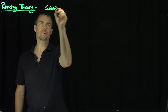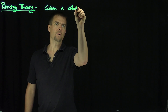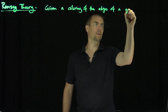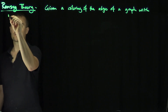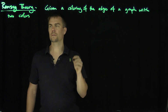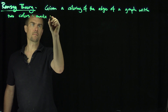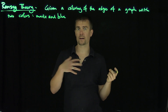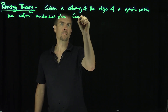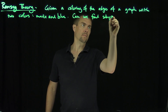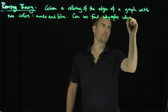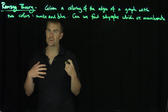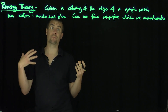Ramsey theory states that given a coloring of the edges of a graph with two colors — let's say maize and blue — can we find a complete subgraph that is only either maize or blue? That's called monochromatic. So that's the basic idea of the question. Ramsey's theorem talks about this question with respect to complete graphs.